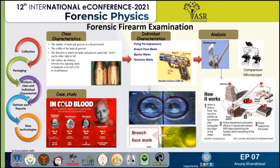In the field of forensic firearm identification, which is sometimes also called as ballistics, we determine if a particular bullet or cartridge case was fired from a specific firearm. This determination can be made on the basis of microscopic markings on bullet or cartridge cases that are unique to ammunition fired from that firearm. Firearm identification is the process that deals with analyzing the bullets and the cartridge cases left behind at the scene of crime to determine if they came from a particular firearm or not.